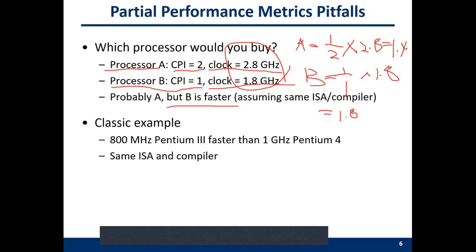There is a real-life example: the Pentium 3 was actually faster than the Pentium 4. The Pentium 4 used very deep pipelines, resulting in a large CPI (low IPC). Although Pentium 4 ran at a higher frequency, its absolute performance was not better. But when Intel was selling both concurrently, people always bought the Pentium 4 because of the higher advertised frequency.